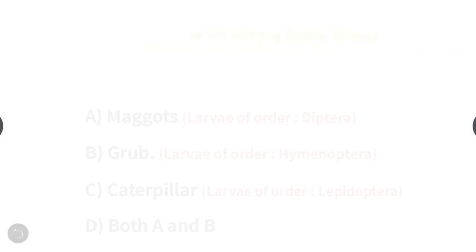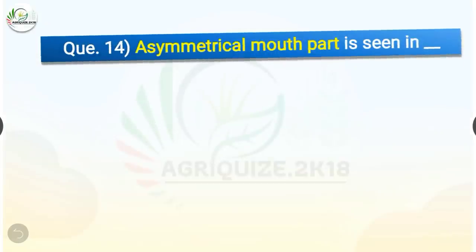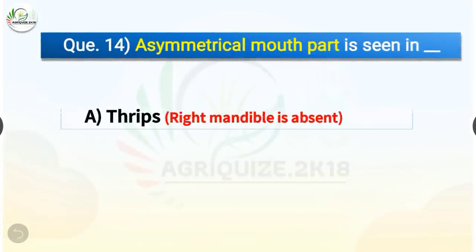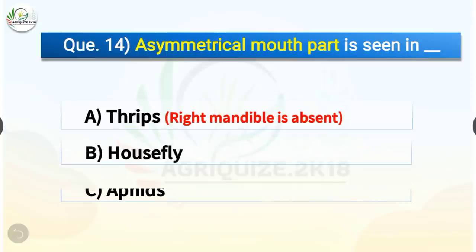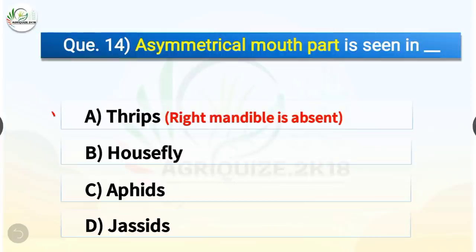Question number 14. Asymmetrical mouth parts are seen in which insect? The options are thrips, housefly, aphids, or jassids. The correct answer is option A, thrips. Asymmetrical mouth parts are seen in thrips, where the right mandible is absent.